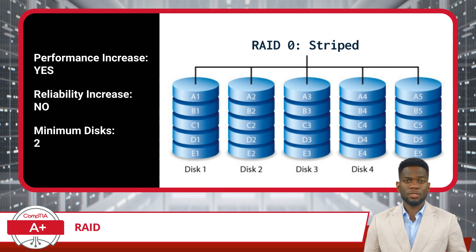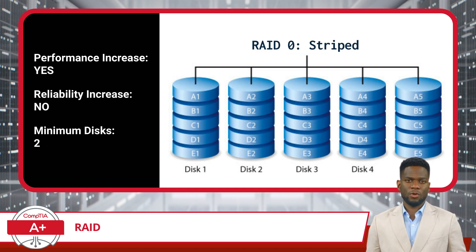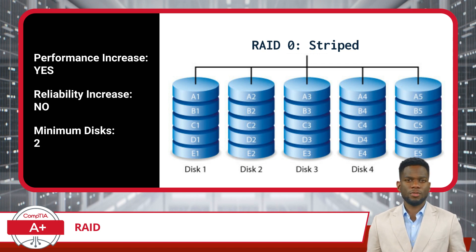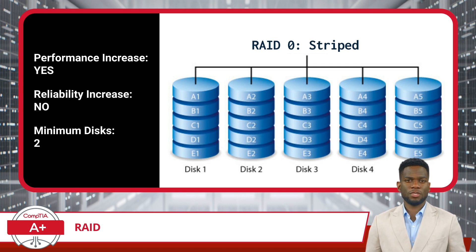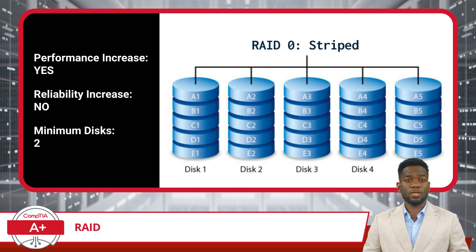RAID 0, for instance, prioritizes speed while also maintaining maximum storage capacity. In this setup, data is striped across two or more disks, where stripe refers to the method of dividing up and distributing data across multiple hard drives — or, to state this another way, each block of data is sequentially written to each disk in the array. RAID 0, however, does not offer redundancy. Worse, if one disk fails, all data is compromised.